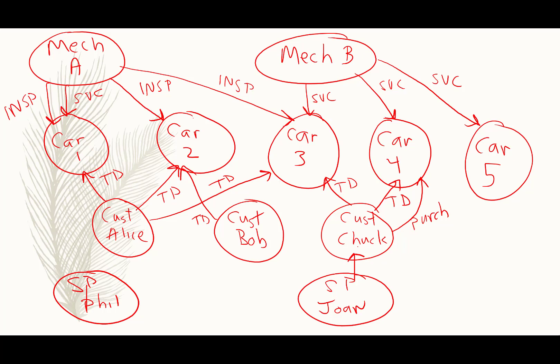And Joan has a relationship with Chuck. What's the relationship between a salesperson and a customer? Well if you've been to a car dealership, you know that they tend to claim you. So Joan sees Chuck walk in. Joan claims Chuck. Joan may also have claimed Bob and Phil may have claimed Alice.